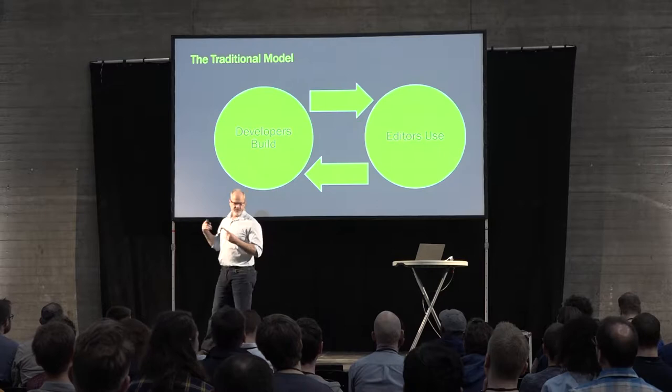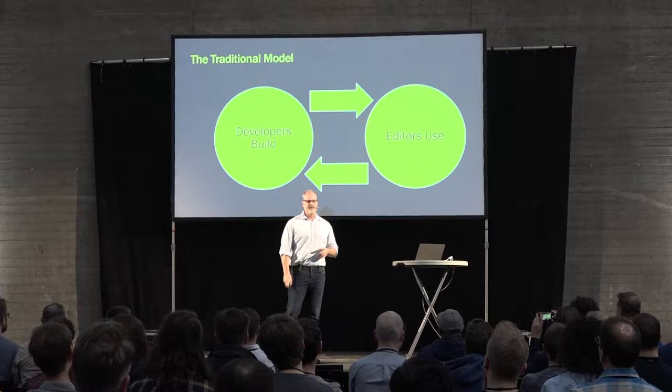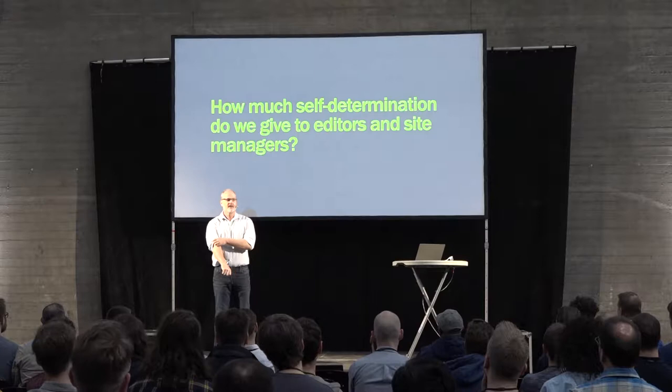This is the traditional model of development. Editors use things that developers build, and if editors want some new kind of functionality, they go back to their developers. The developer builds something new and sends it back to the editor. It's a constant cycle between editors and developers. But what if we could break that cycle up? I want to talk about the concept of editorial self-determination.